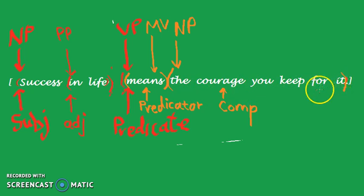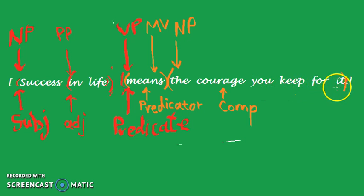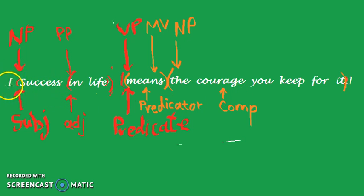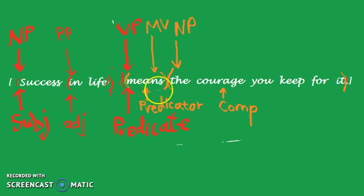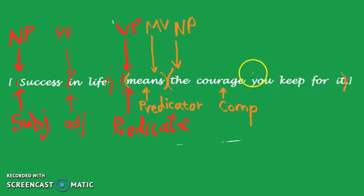If we take a further look at the complement — 'the courage you keep for it' — we have another verb. Since there's another verb, it means we have a verb phrase. Notice that for that verb phrase, there is a subject: 'you.' So 'you keep for it' is a clause within the sentence. We treat it just like a sentence, using the same square brackets we put at the beginning of the main sentence — not parentheses.